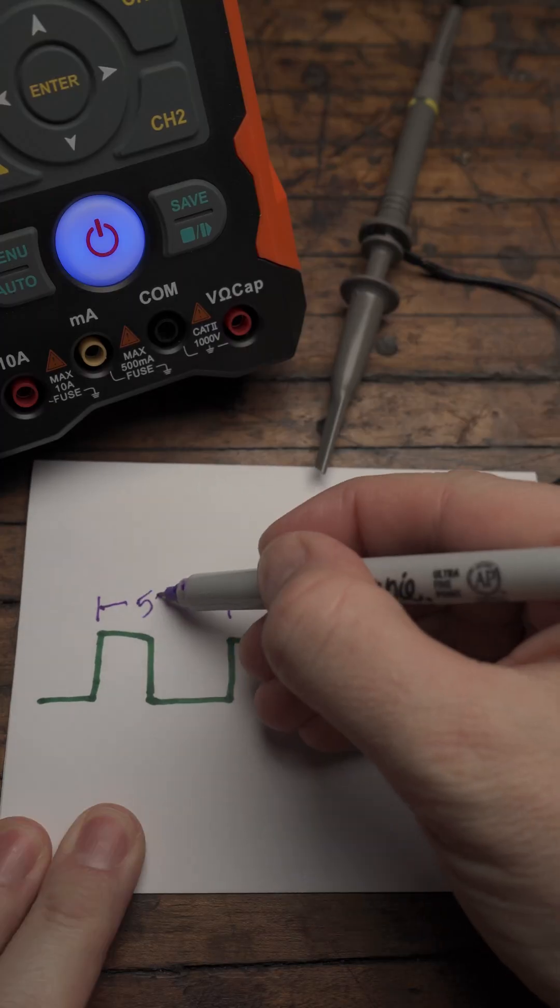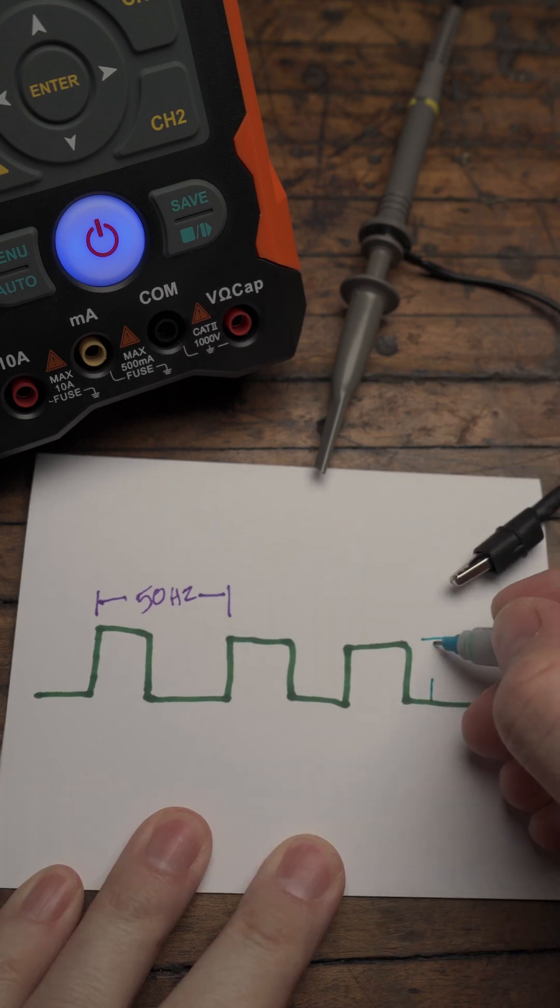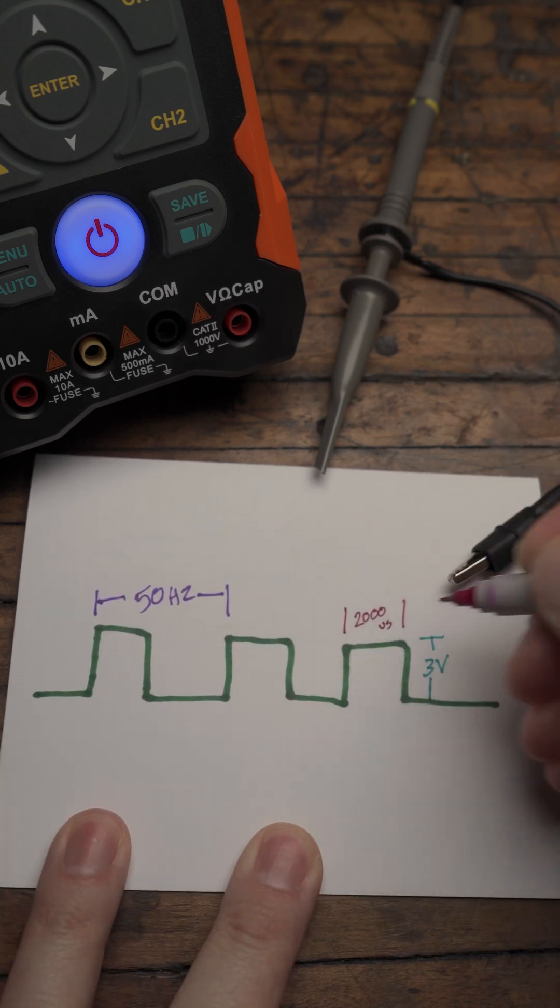This process shows the output is a 50 hertz square wave peaking at 3 volts with a 2,000 microsecond pulse width.